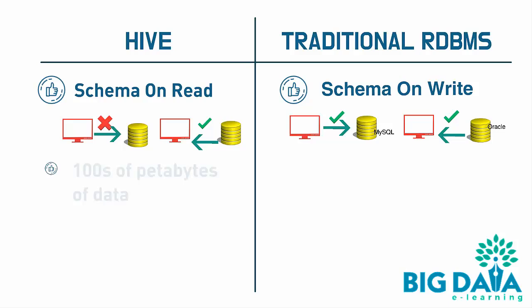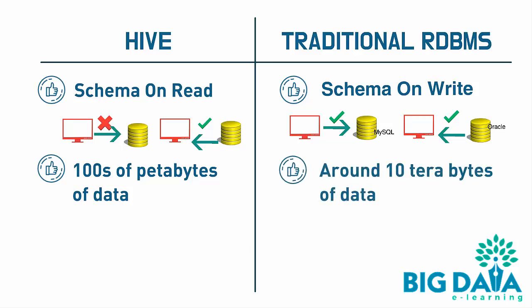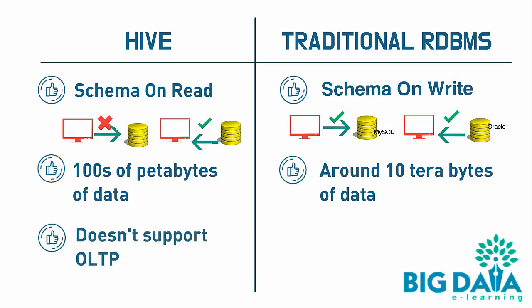Hive allows you to store hundreds of petabytes of data because Hive stores data in HDFS, which has scalable storage space. RDBMS have a maximum storage capacity of around 10 terabytes of data, and querying such large data is not an easy task. Hive doesn't support OLTP, whereas RDBMS supports OLTP.